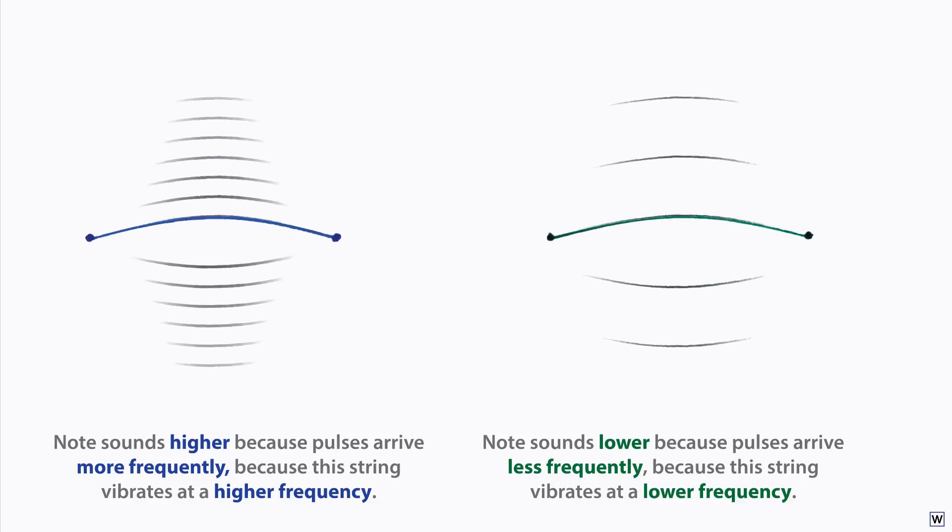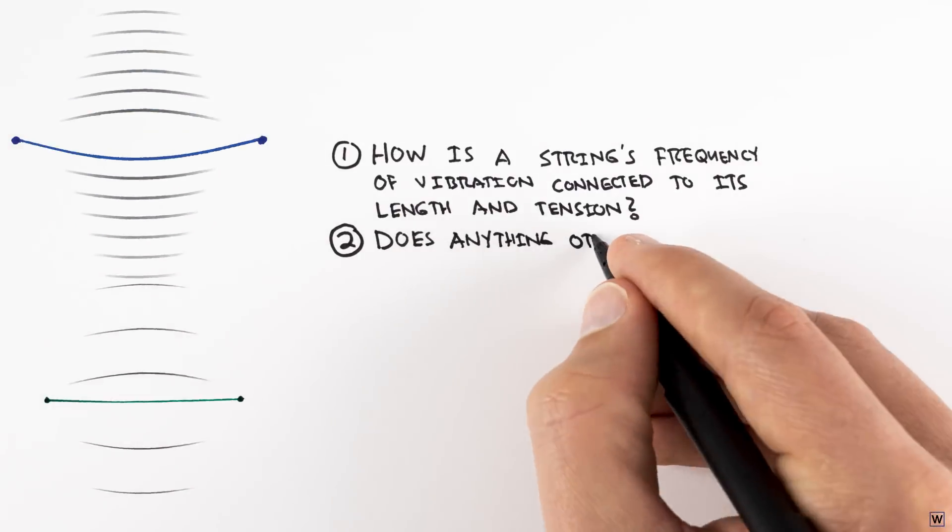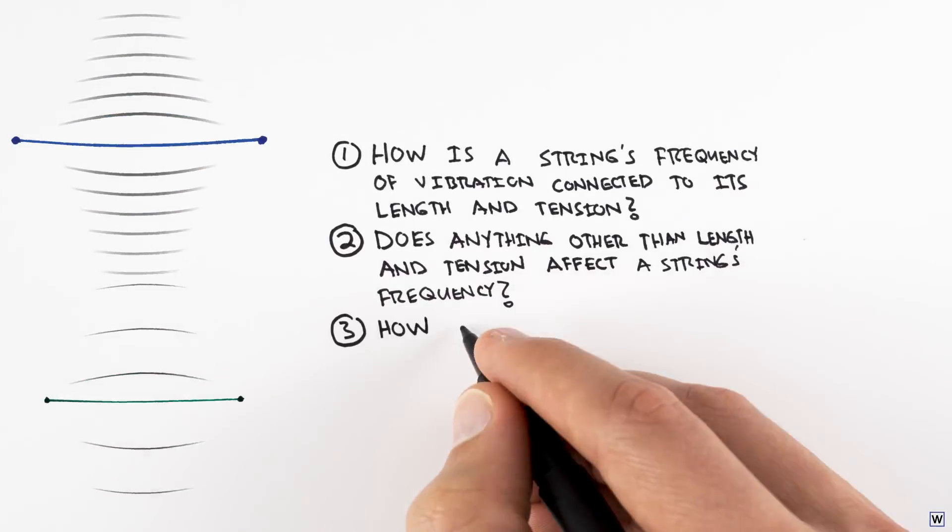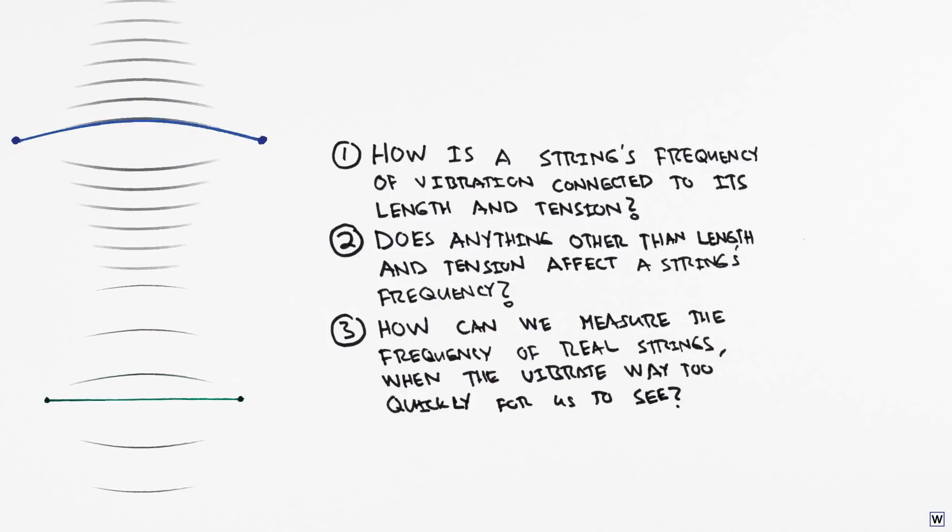This idea raised all kinds of new questions. How is a string's frequency of vibration connected to its length and tension? Does anything other than length and tension affect a string's frequency? How can we measure the frequency of real strings when they vibrate back and forth way too quickly for us to see?